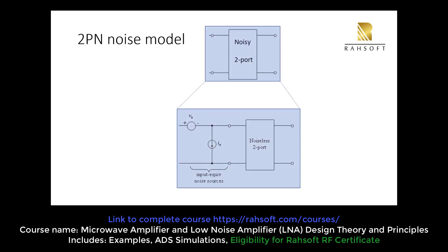The whole system is essentially equivalent to a noisy two-port. We connect it to our source — as discussed in the previous section, we have a two-port network with ZL and ZS. This is our ZS, which we can represent with a voltage source. At this point we are converting from a Thevenin to a Norton circuit.